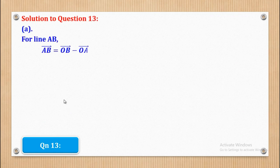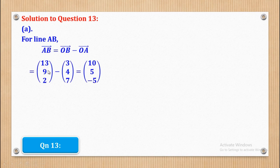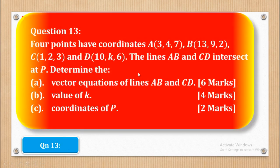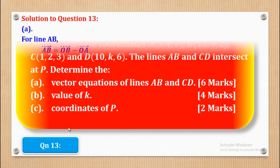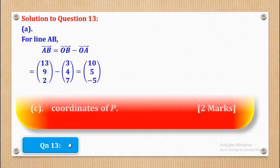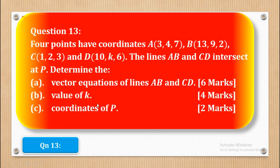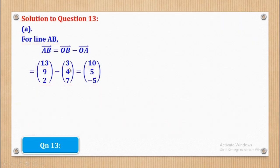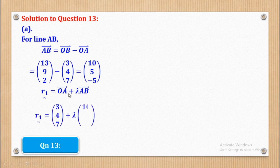For line AB we find the direction vector AB = OB minus OA. OB is (13, 9, 2) and OA is (3, 4, 7), so when I subtract I come up with (10, 5, -2). Therefore the vector equation of line AB is R1 = OA + λ·AB, and I substitute to get the vector equation for line AB.